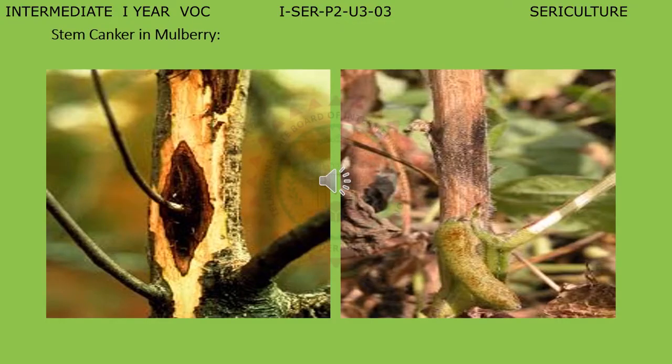Looking at the diagram of stem canker in mulberry: stem canker is caused by Botryodiplodia theobromae. The symptoms are greenish-black lesions appearing on the stem at the initial stage, which change to dark black and hard carbonaceous structures. To prevent cuttings from being infected with stem canker fungus, they are soaked in a 10 ppm solution of Bavistin for about 12 hours and washed with water before planting. Affected stems should not be used for preparation of cuttings because they do not sprout.